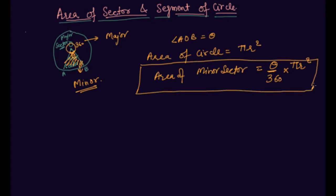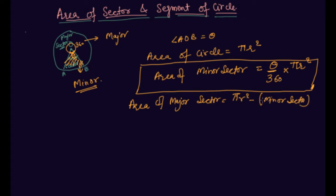I hope you guys are clear on how to find the area of a minor sector. The area covered by the sector is based on the angle covered by the minor sector divided by the total 360 degrees, into the area of circle. Now if you have to find the area of the major sector, it will be πr² minus the area of the minor sector — that is, from the total area of the circle you subtract the minor sector area.